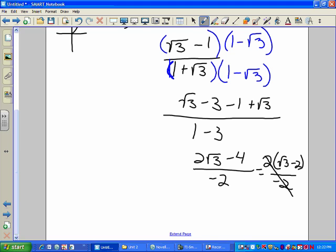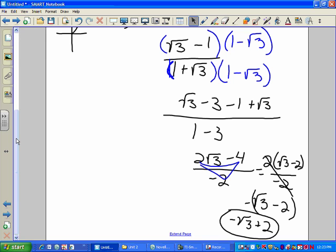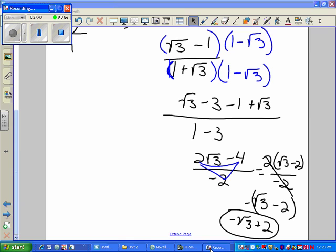Notice I'm working down my paper. This is good math. Square root of 3 plus square root of 3 is 2 square root of 3 minus 4 over negative 2. Do you notice how everything has a factor of 2 in it? If I factor out a 2 from the numerator, don't I get square root of 3 minus 2 over negative 2? And so the 2's will cancel. My negative hops up to get negative square root of 3 minus 2. You're welcome to put negative square root of 3 plus 2, and yes, that's the answer.